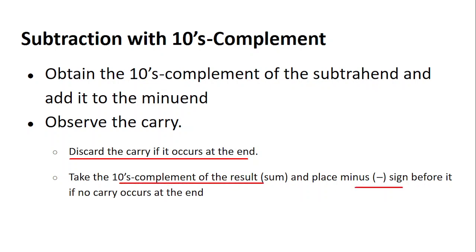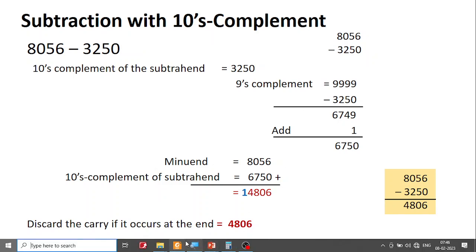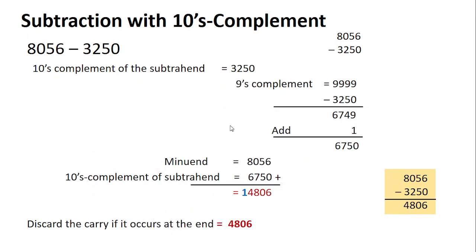Let me solve the problems. I'm going to take a four-digit problem first — question D — and then go on with the others. The given question is: subtract 3250 from 8056. The first step is to find the subtrahend and then find its tens complement.